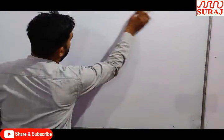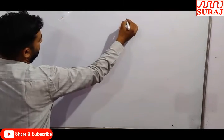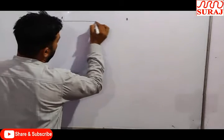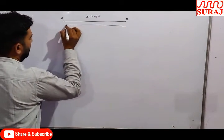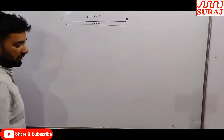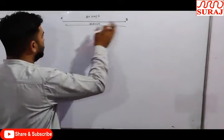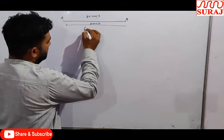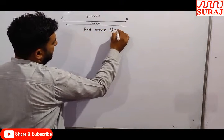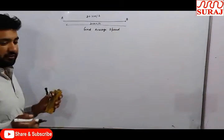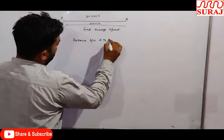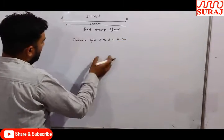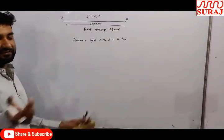First question: there is a point A and a point B. A body goes from A to B with a speed of 20 km per hour, and the body comes back from B to A with a speed of 30 km per hour. Find the average speed. Since distance is not given, we assume the distance from A to B equals x kilometers, and from B to A is also x kilometers.